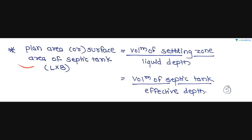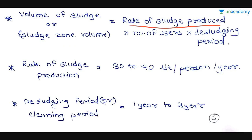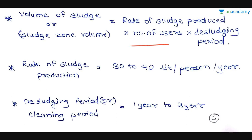The plan area or surface area of the septic tank (L × B) equals the volume of the settling zone divided by the liquid depth, or the volume of the septic tank divided by the effective depth. The volume of the sludge zone equals the rate of sludge produced multiplied by the number of users multiplied by the desludging period.